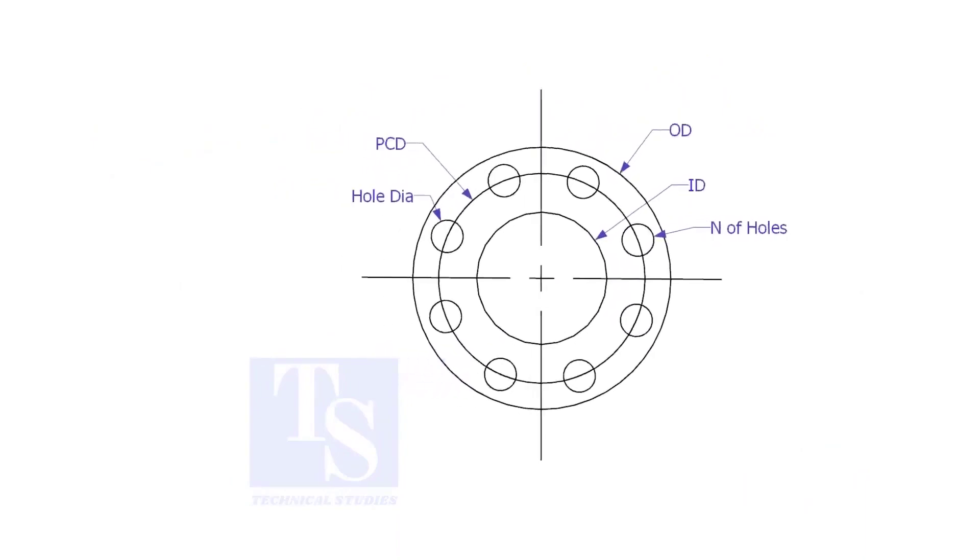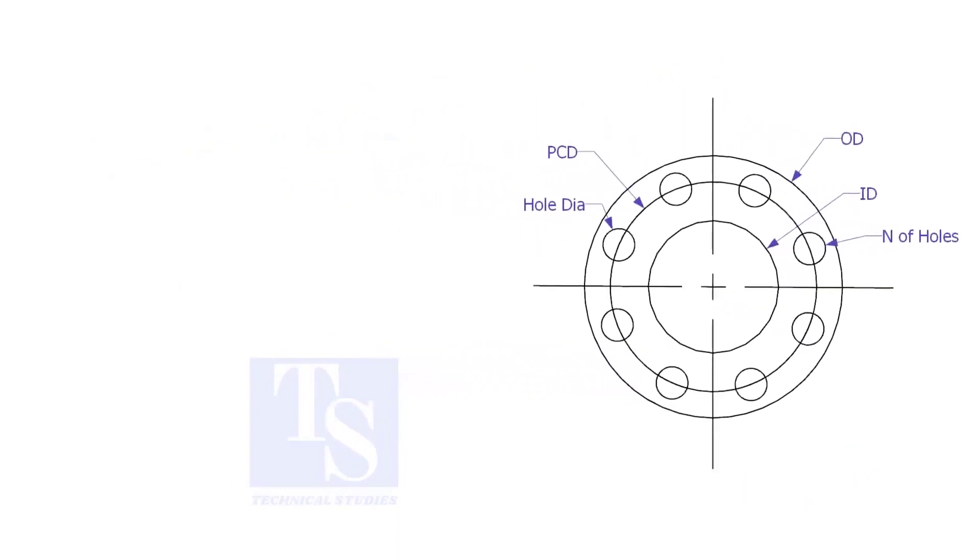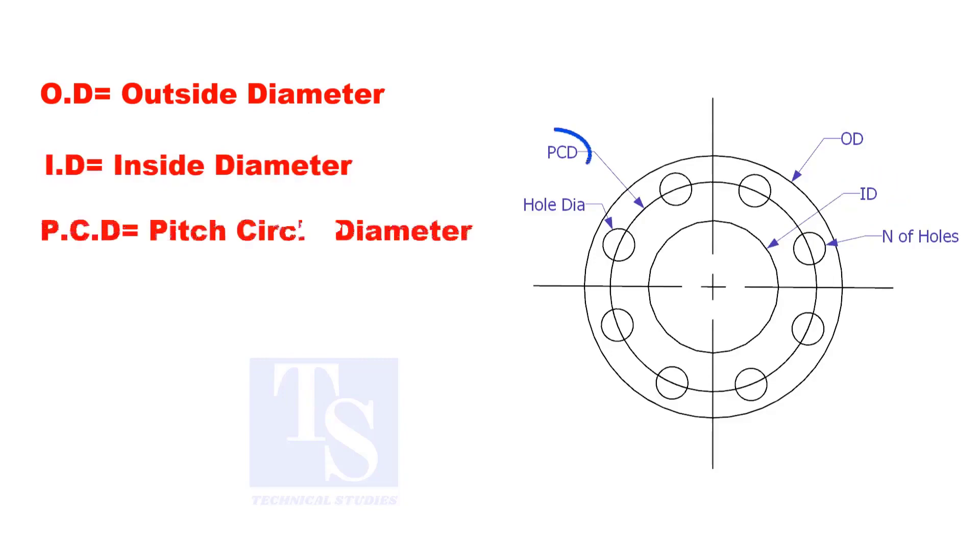To make a plate flange, we need to know the following things. OD, the outside diameter. ID, the inside diameter. PCD, the pitch circle diameter.